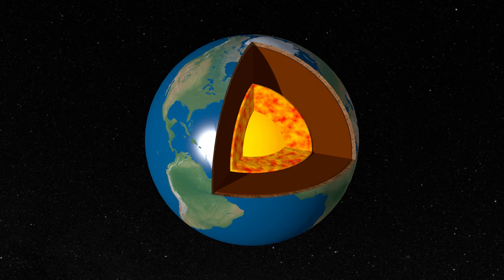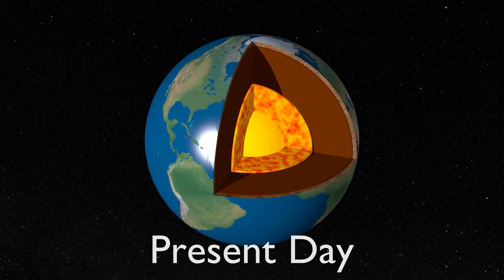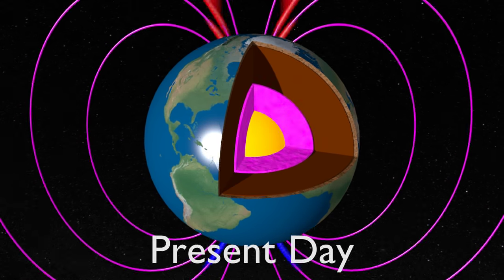Until recently, scientists believed the field originated from the swirling liquid iron of the outer core, as it does today.